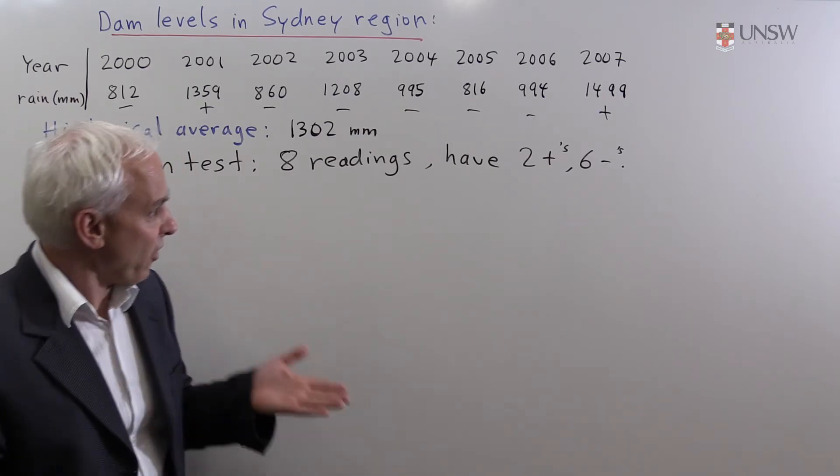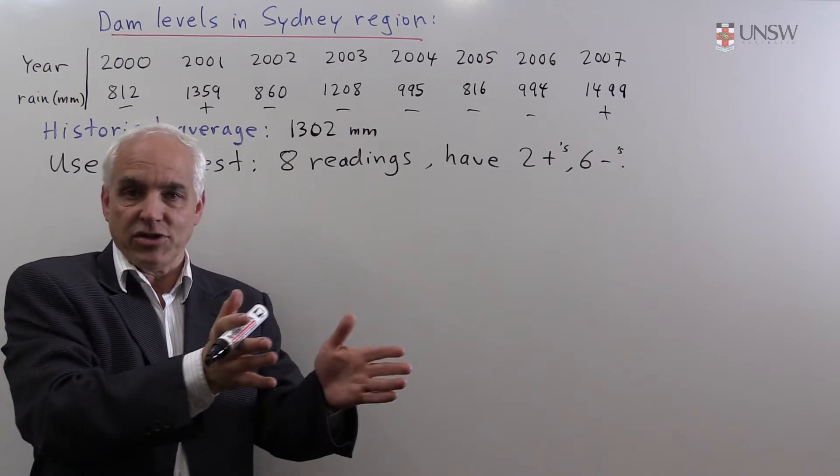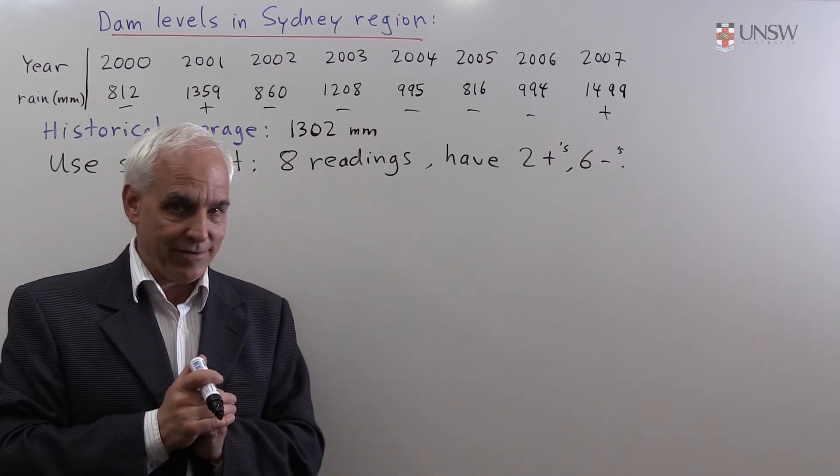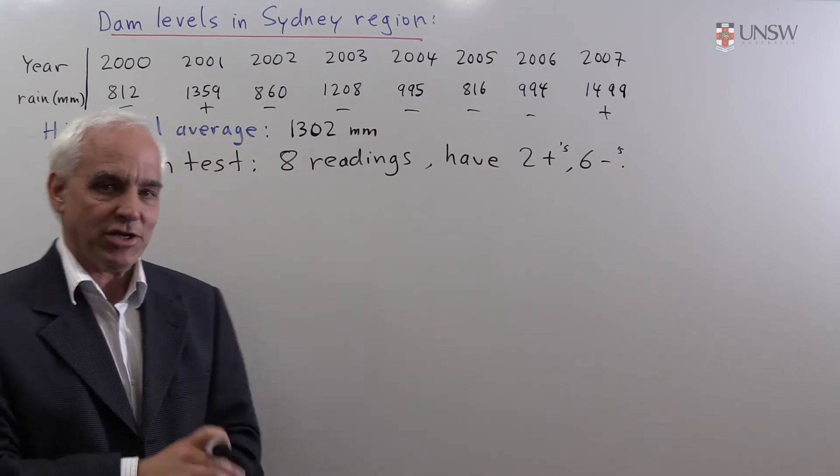And we'd like to ask the question, well, from this, can we deduce that in fact the long-term average is kind of shifting? Or whether is this perhaps just due to luck? So what is the probability of this occurring just due to luck?